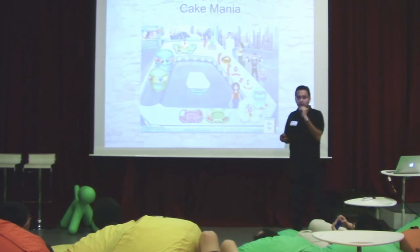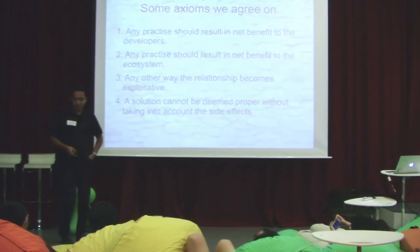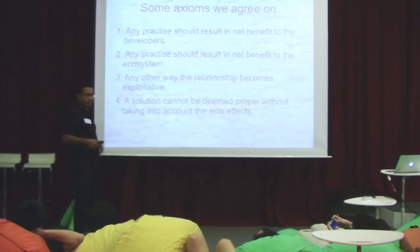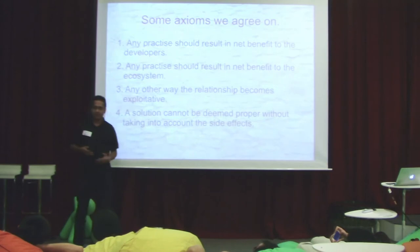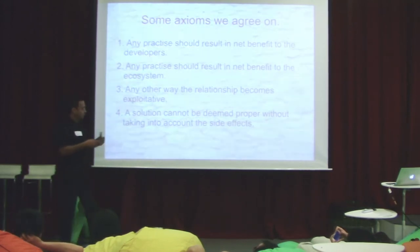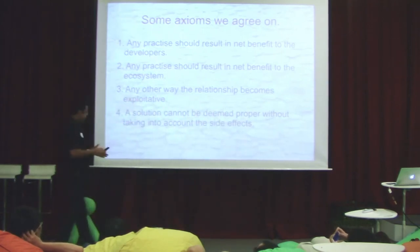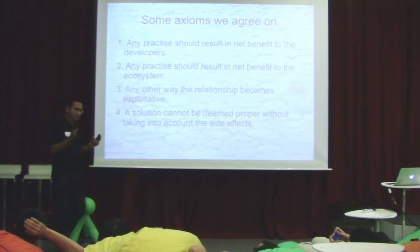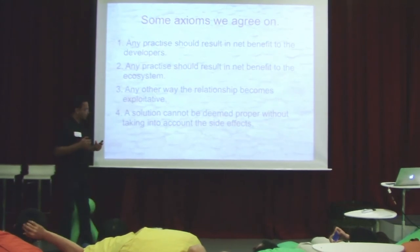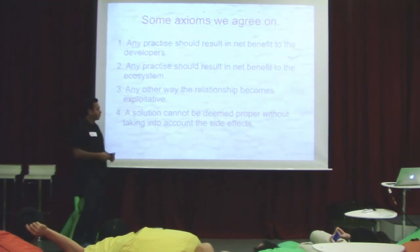Now let us get into profit and loss. Some axioms we all agree on: any practice should result in net benefit to developers, because if it does not benefit developers they will stop making games. Any practice should result in net benefit to the ecosystem, because if the ecosystem is unhealthy you won't be able to sell games. Otherwise the relationship becomes exploitative. And when people propose a solution, their reasoning goes: 'here's a solution, if I do this then this thing will stop, therefore it's a good solution.' But you also need to take into account the side effects your solution brings. Without considering side effects, you cannot deem a solution proper.